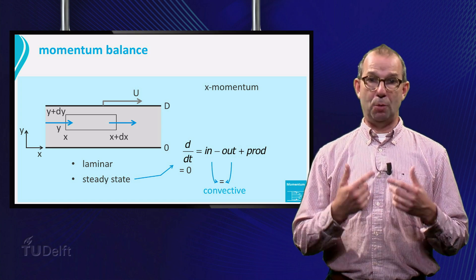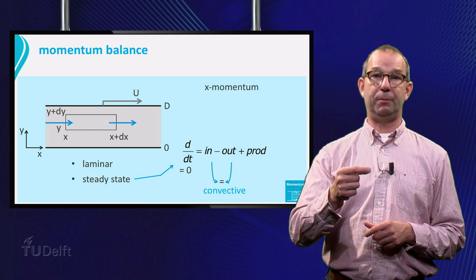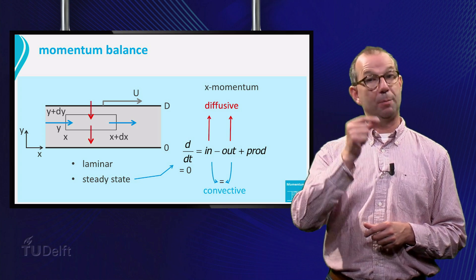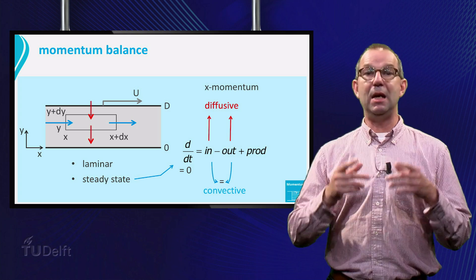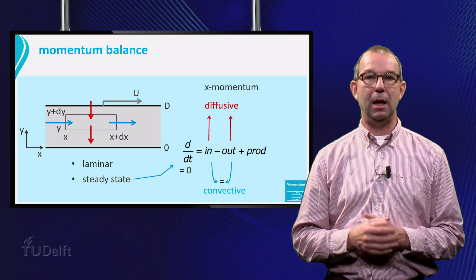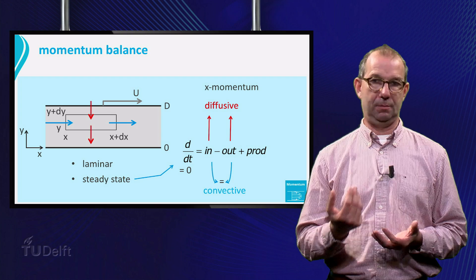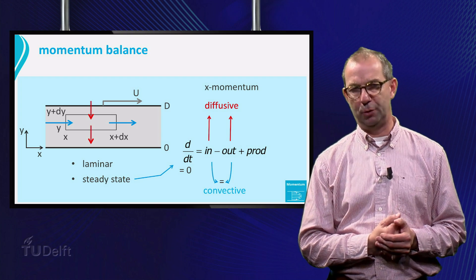There is also momentum transfer from above into our control volume at y plus dy. This is diffusion of x-momentum into the control volume. At the bottom, an equivalent flow is present, out of the control volume.